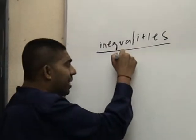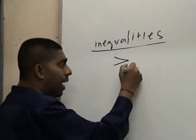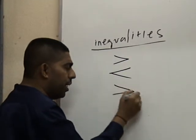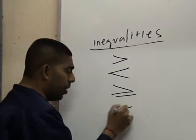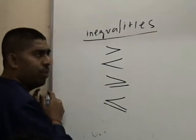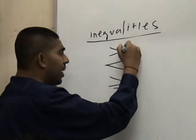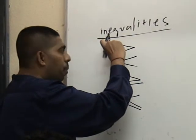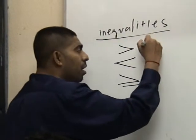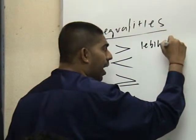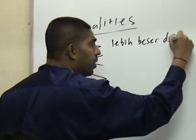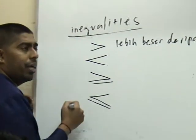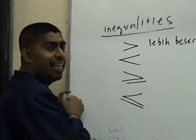Iaitu ada tanda seperti ini. Kamu kena tahu empat tanda ini. Tanda ini, kamu tengok dekat depannya mulut terbuka besar. Maksudnya lebih besar daripada. In English it is bigger than.